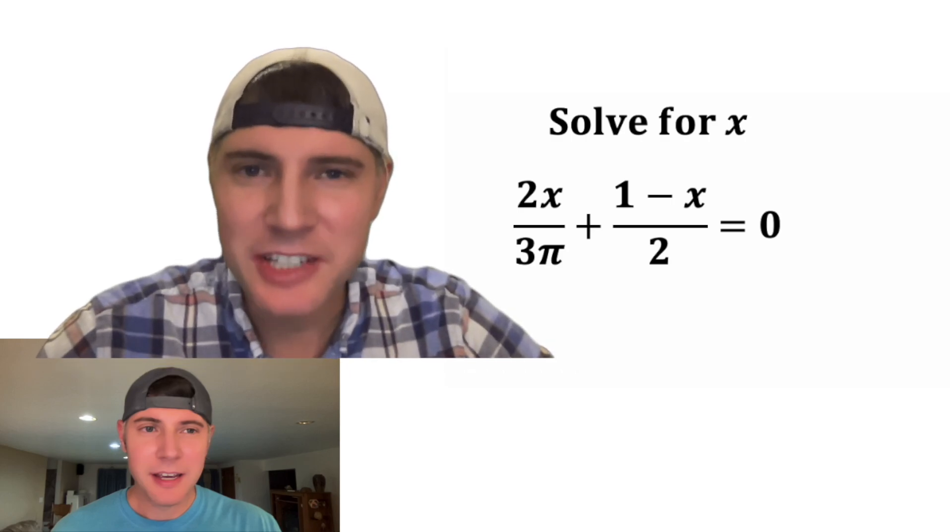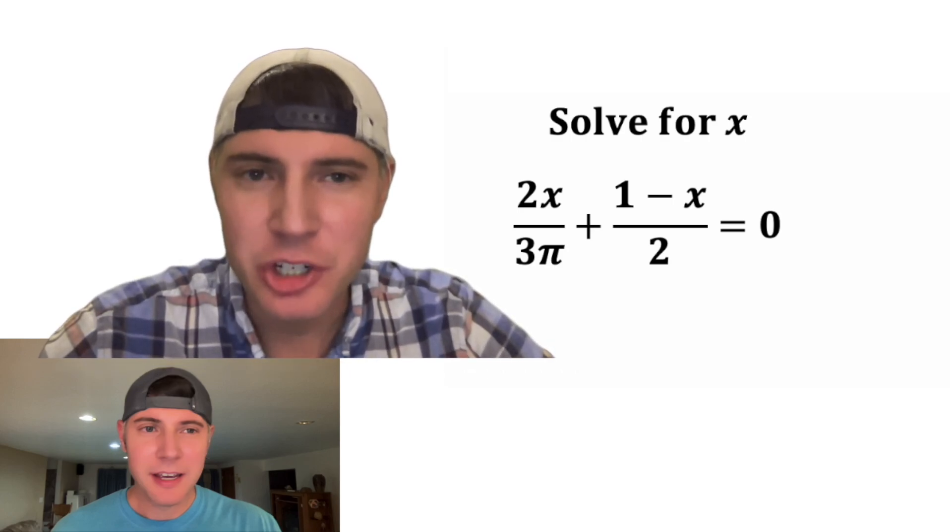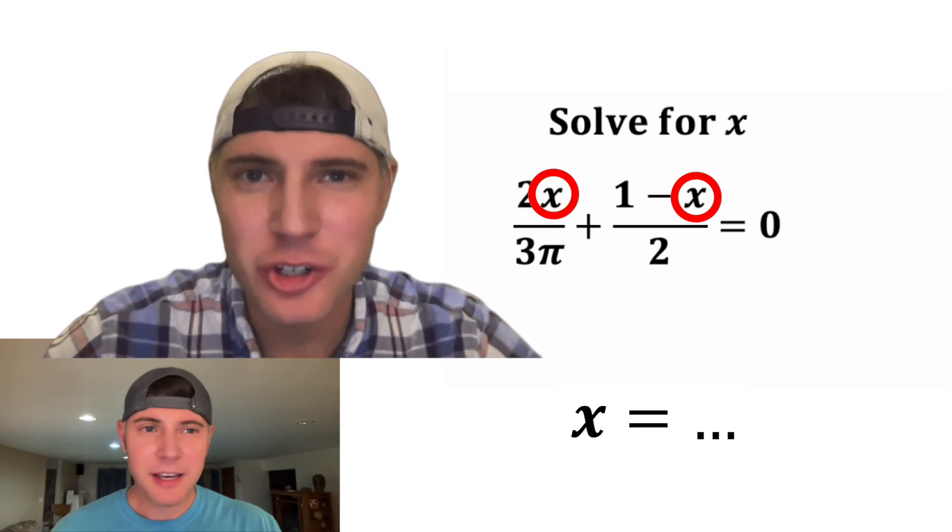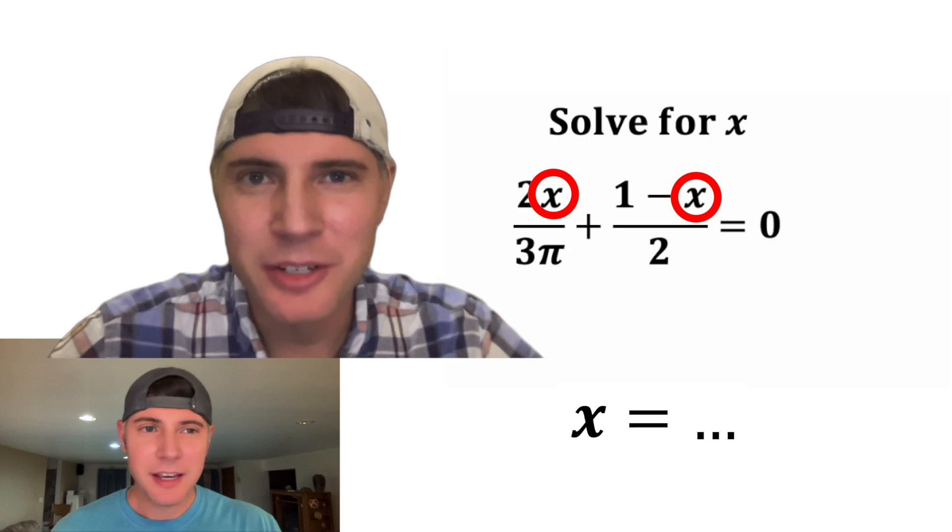The tricky thing here is we want to get x alone. So when we're done, we should have x equals something. The thing people struggle with is how do we get x alone when there's two x's? So let's watch the video and see how it's done.